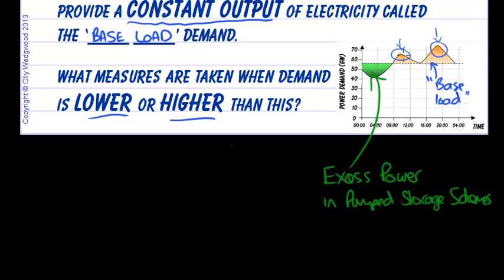Then when the demand peaks come along during the day, we can let that water out. It flows downhill, turns turbines, and generates electricity. So that's one thing we can do during this period of excess power.